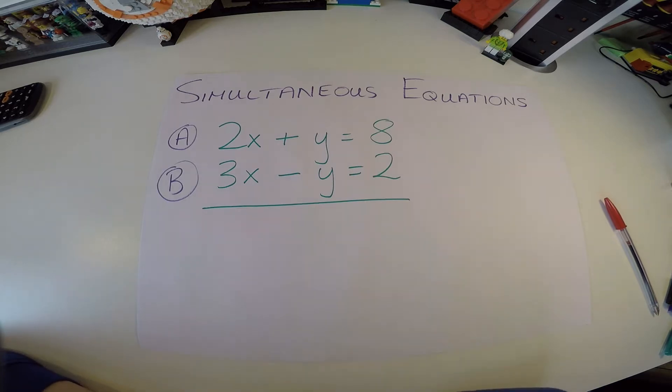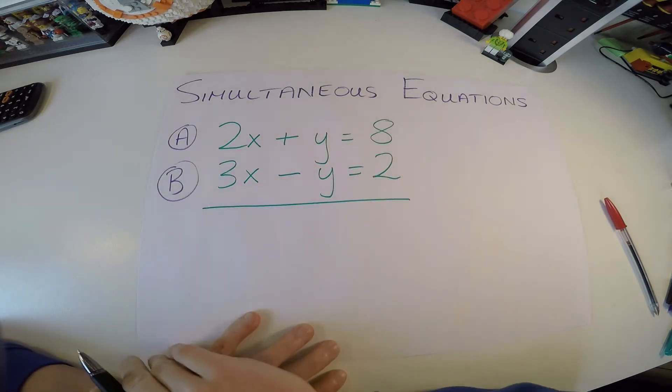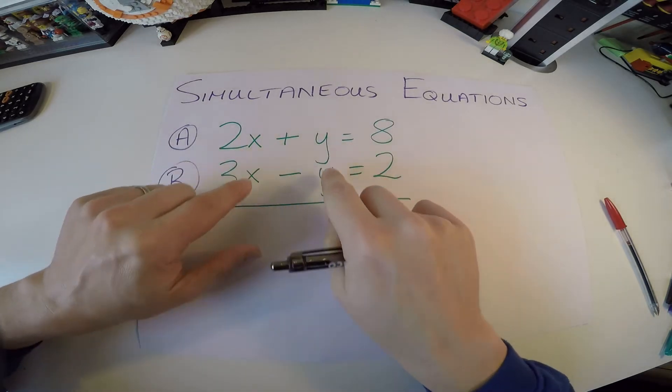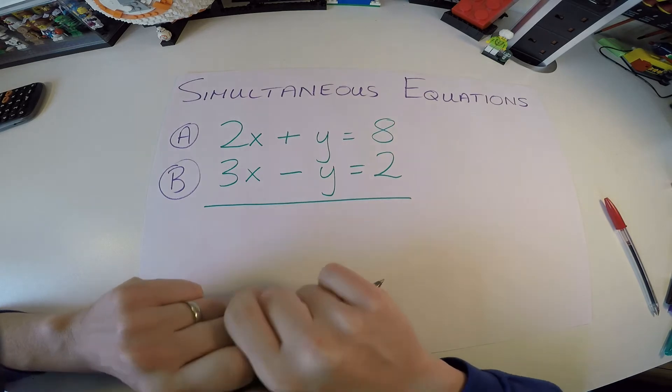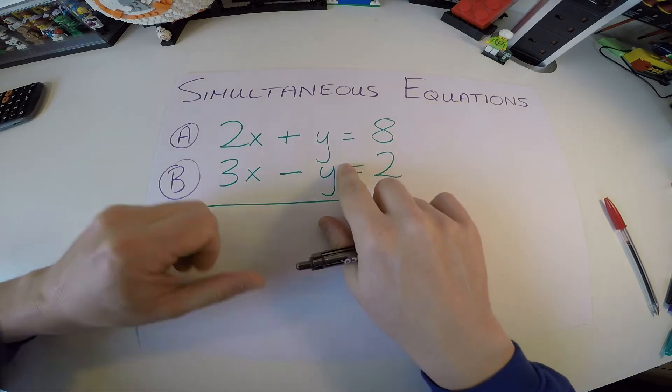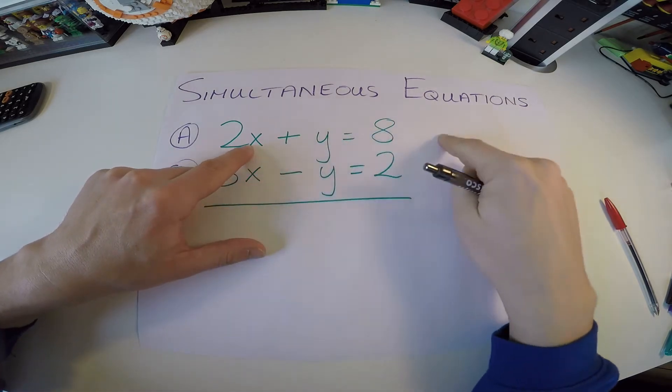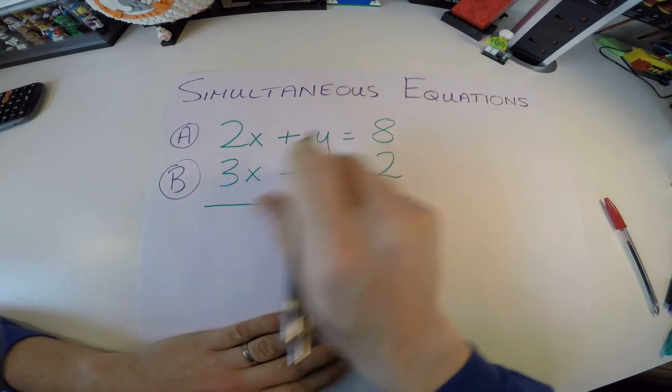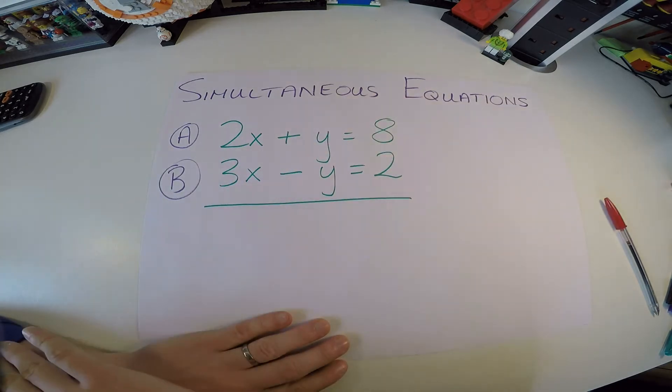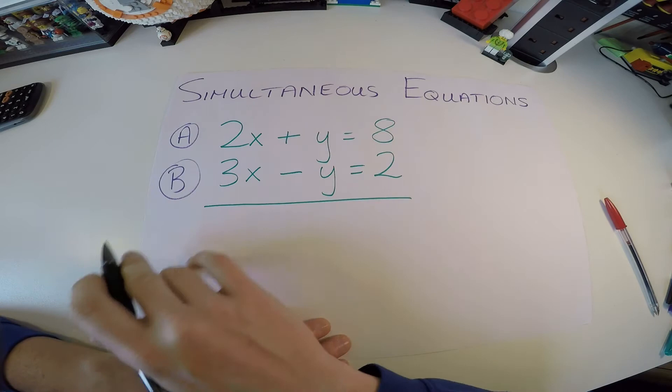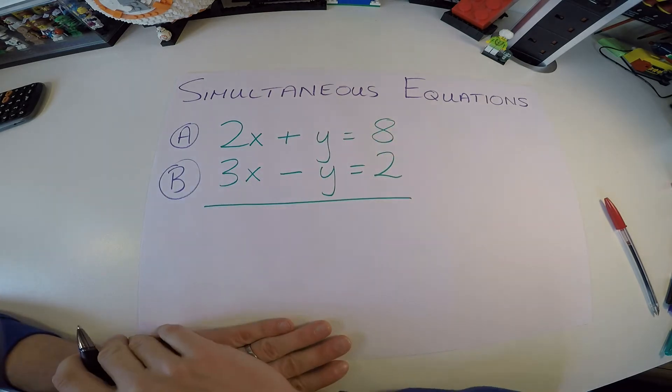This video is on simultaneous equations. Simultaneous equations will definitely come up in your exam. This is a junior cert style simultaneous equation. There are two unknowns here, an x and a y. In a Leaving Cert exam, you're more typical of seeing three unknowns, an x, y and a z maybe. But we're just going to start off with this one here, and this is mainly based around two variable equations for the junior cert.